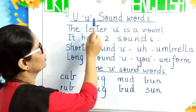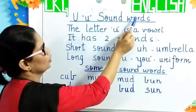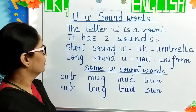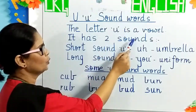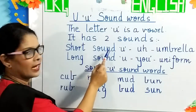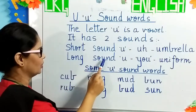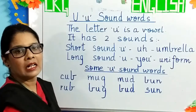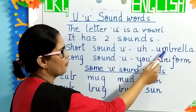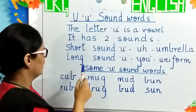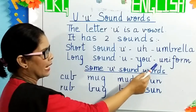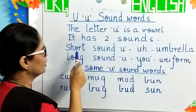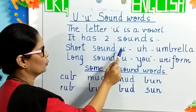The new topic today is U sound words. The letter U is a vowel. It has two sounds: short sound and long sound. The short sound U is 'u' as in umbrella. The long sound U is 'u' as in uniform. Today we will learn the short sound U.